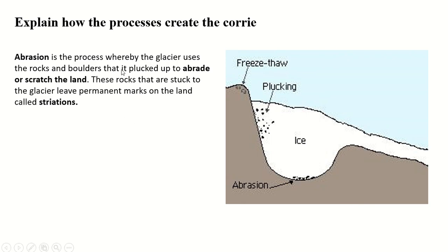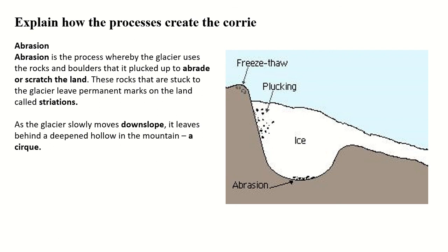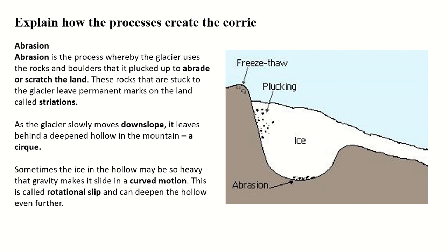Abrasion is our third process. Abrasion is the process whereby the glacier uses the rocks and boulders that were plucked to abrade or scratch the land. As the glacier moves down the mountain it creates a sandpaper-like action, abrading the land and enlarging the crevice that is starting to form our corrie. The rocks stuck to the glacier leave permanent marks on the land called striations — these are scrapes in the land. As the glacier slowly moves downslope it leaves behind a deepened hollow in the mountain.